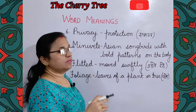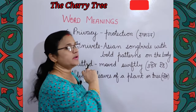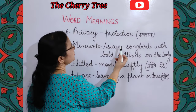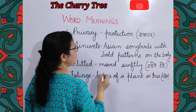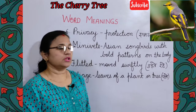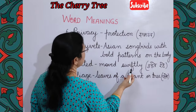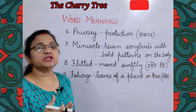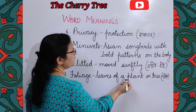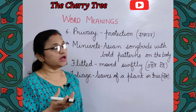Next is 'privacy' — its meaning here is protection, suraksha. Next is 'minivets' — Asian songbirds with bold patterns on the body. Asian birds hain jho gaati hain aur jinki body par bold patterns hote hain, as you can see in the picture. Next is 'flitted' — moved swiftly, udte rahe. Next is 'foliage' — leaves of a plant or tree, paudhe ya pedh ke patte.